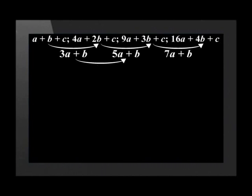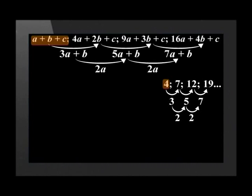Now that we've found the first differences, let's work out the second difference. 5A plus B minus 3A plus B equals 2A. And 7A plus B minus 5A plus B is equal to 2A. As expected, since we are working with a quadratic sequence, the second difference is a constant. Using this number pattern, we can solve for A, B and C by using the first term, the first difference between the first and second term, and the second difference.